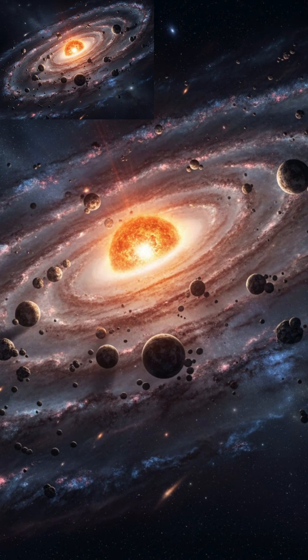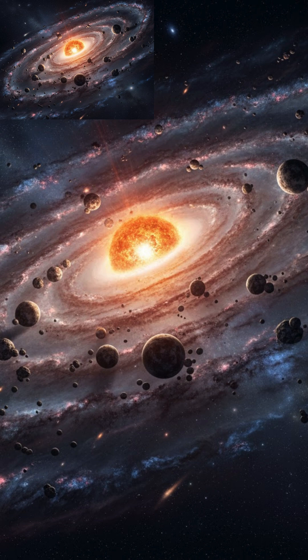Within this disk, dust and gas coalesced through accretion to form the planets, moons, asteroids, and other objects that orbit the Sun today.